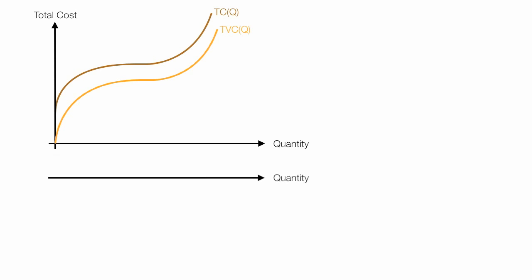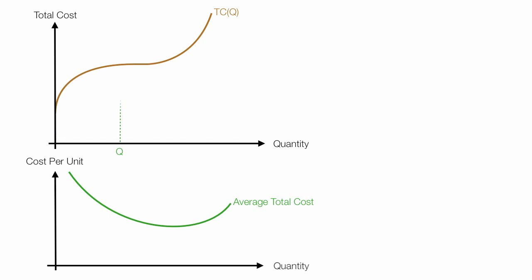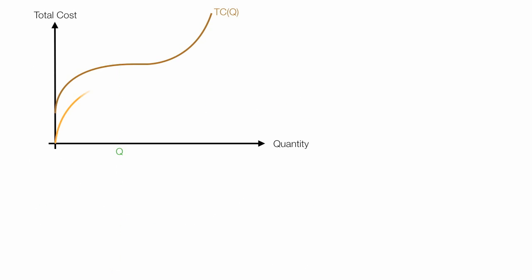I'm going to drag the quantity axis straight down, but on the vertical axis I'm going to put cost per unit. The average total cost curve looks like that. If I pick the quantity and the total cost at that level, average total cost is equal to total cost divided by quantity. I'm going to draw in the total variable cost curve because I'm going to use this later on, and I'm going to calculate the average variable cost.